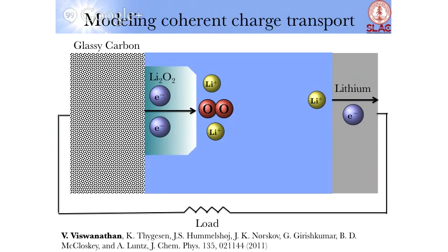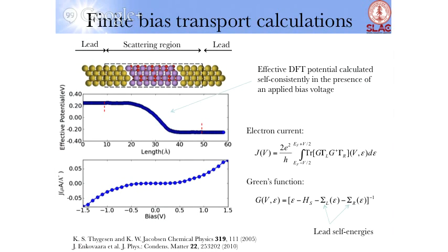The hard part is understanding how the electron enters the lithium peroxide, which is set by an extremely complicated state. The key trick is that there is a well-defined potential relative to vacuum where this reaction proceeds, and under discharge conditions, we can approximate this using gold. We therefore probe coherent charge transport in a metal-insulator-metal configuration, with gold on both sides, studying how much current can be supported as a function of bias across the two leads with lithium peroxide in between.